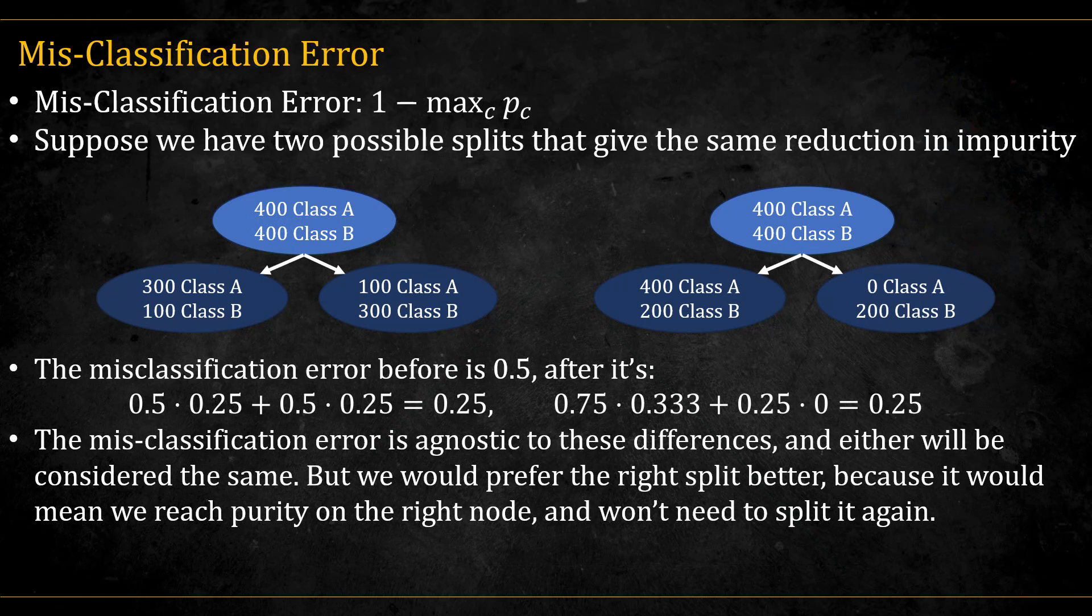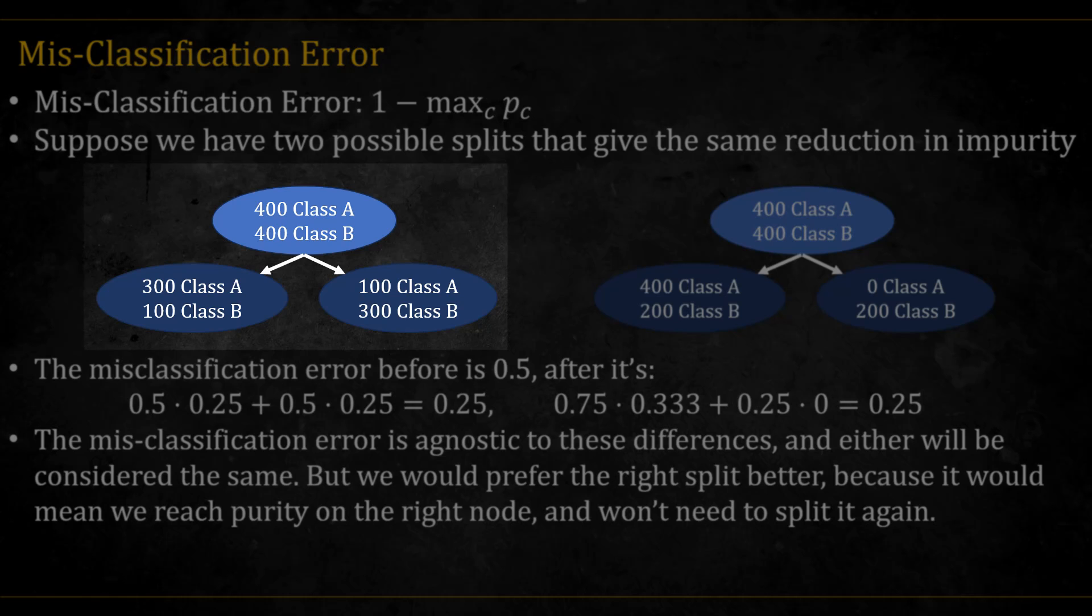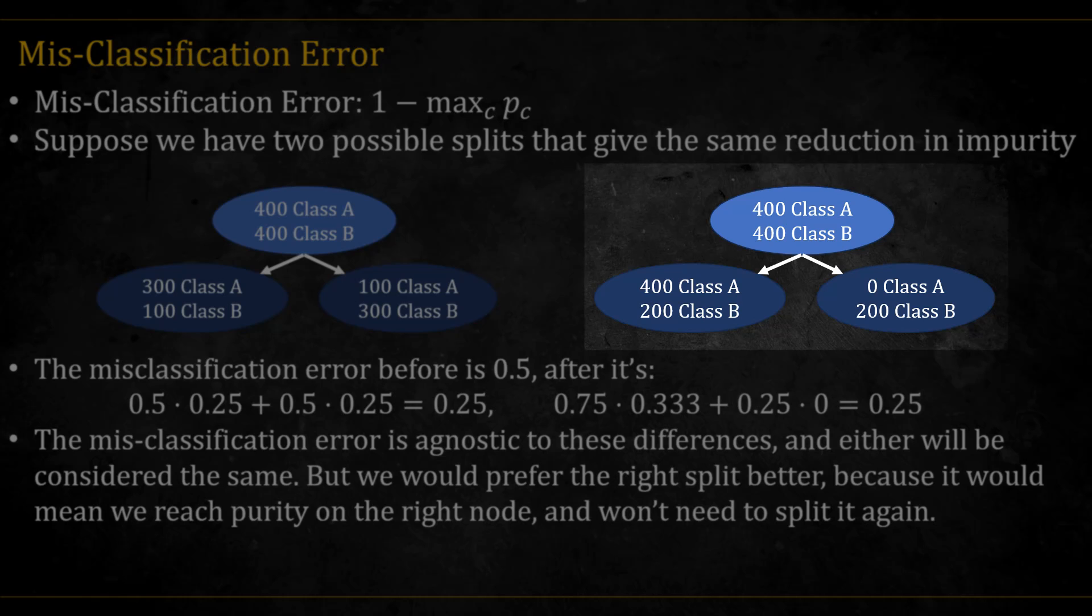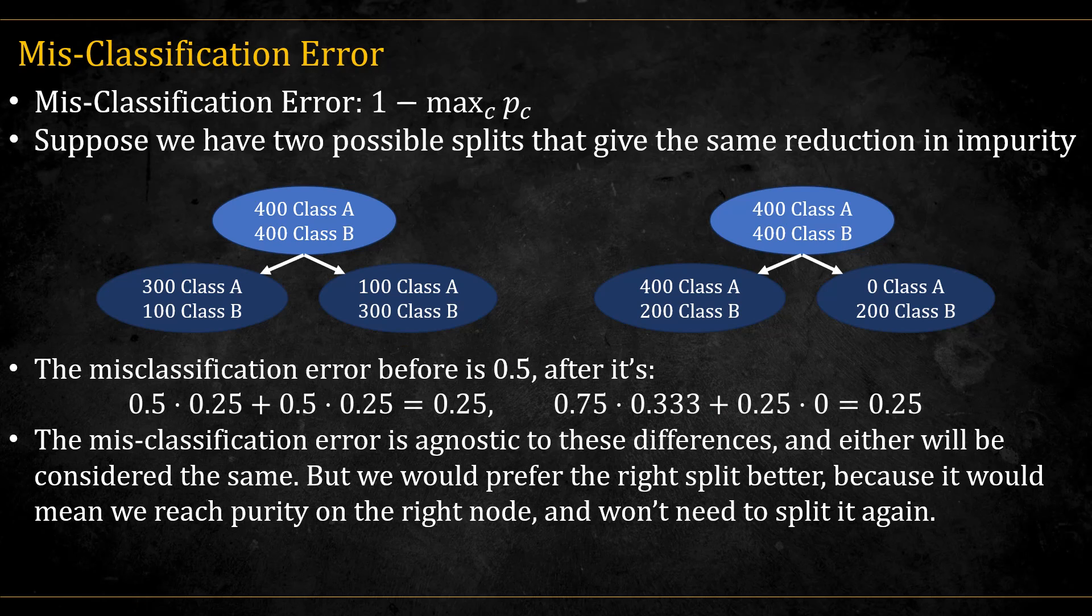The misclassification is not so good for splitting. Let's see why. Suppose we have a node with equal number of observations in both classes. We find one split that creates the following two nodes on the left, and another split that creates the following two nodes on the right. Which one is better? Which one should we choose? We calculate the weighted misclassification error for both, and find out that it's the same.